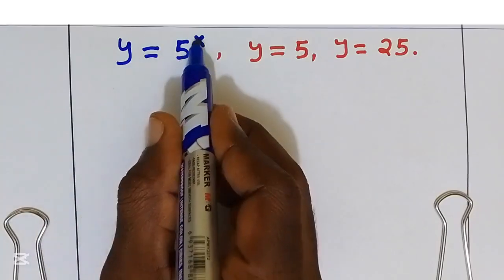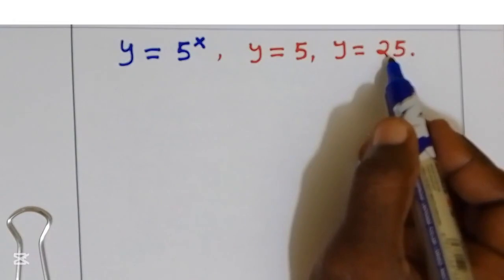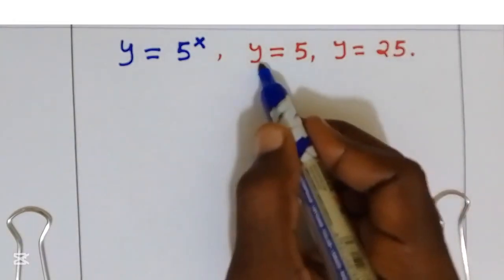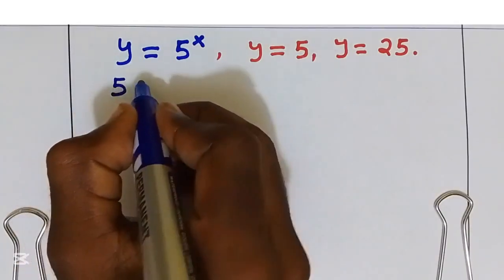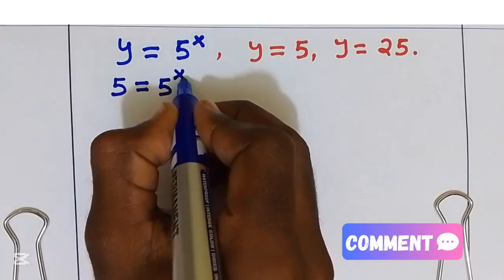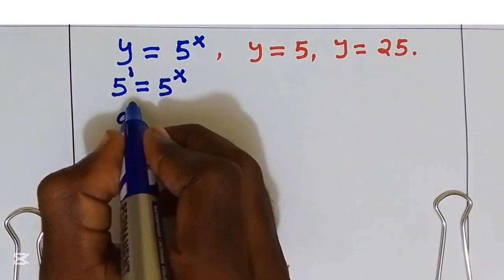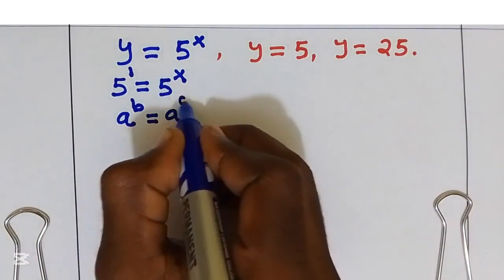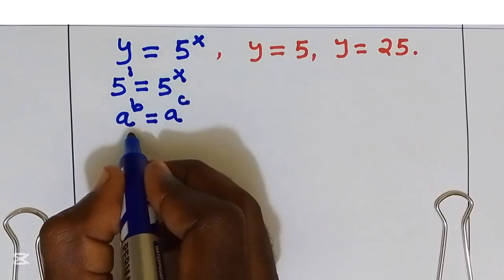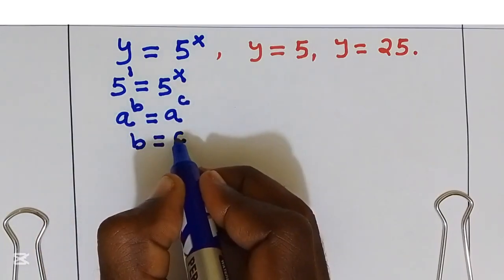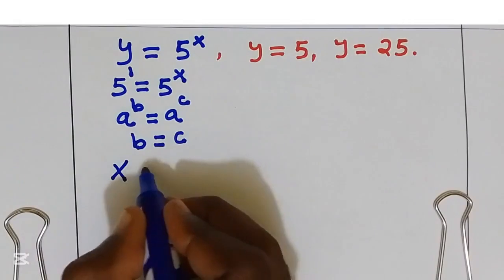We let y equal 5^x. Substituting y equals 5: 5^x equals 5, which is 5^1. Since the bases are the same, the exponents must be equal, so x equals 1.